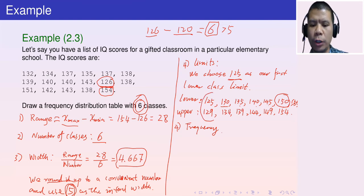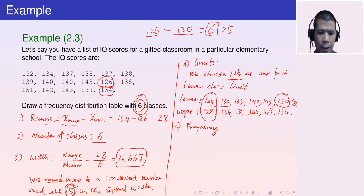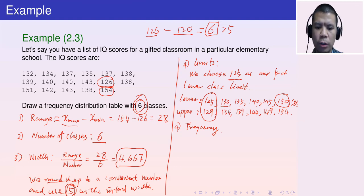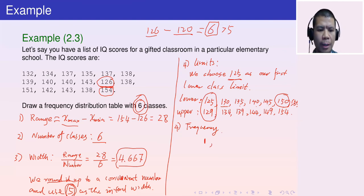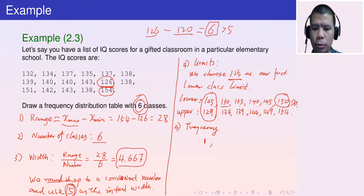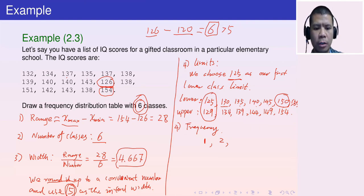Step five: count the frequencies. For 125–129, only 126 falls in this interval, so frequency = 1. For 130–134, there are 2 values. For 135–139, there are 7 values. For 140–144, there are 5 values.